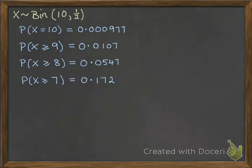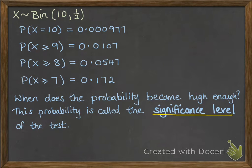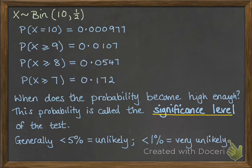When does that probability become high enough? That probability is called the significance level of the test — that's the point where we say it's not random anymore and we're going to accept that claim. Generally speaking, we talk about unlikely being less than 5% and very unlikely being less than 1%. A lot of the significance testing we do is at the 5% level.